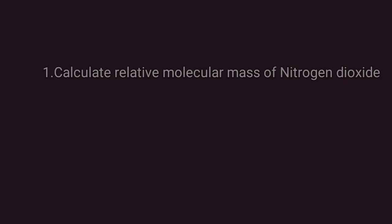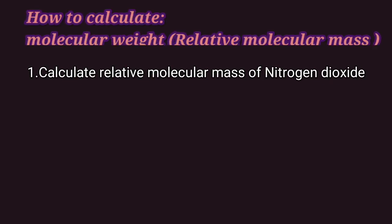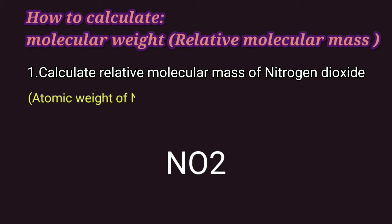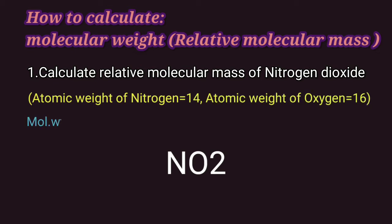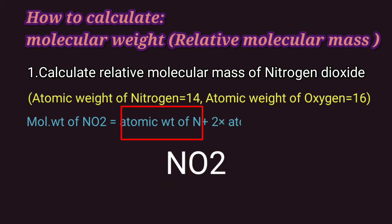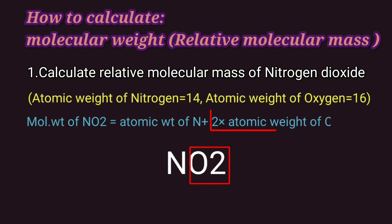Our first question is to calculate the relative molecular mass of nitrogen dioxide. The atomic weight of nitrogen is 14 and that of oxygen is 16. To calculate the molecular weight of nitrogen dioxide, we will see how many nitrogen atoms there are. There is one nitrogen atom, so atomic weight of nitrogen, plus there are 2 oxygen atoms, so plus 2 into atomic weight of oxygen atom.